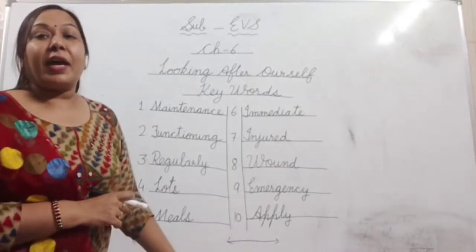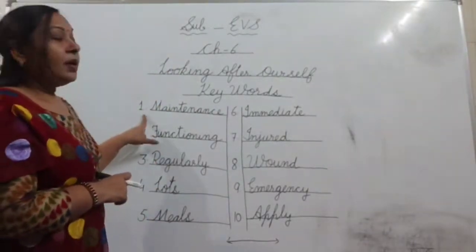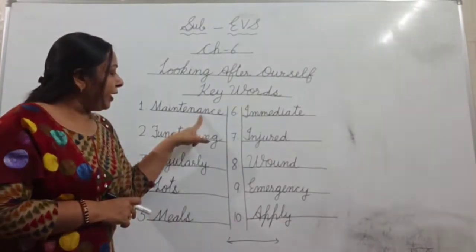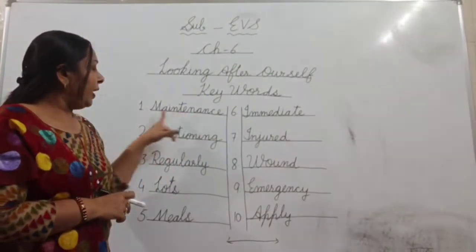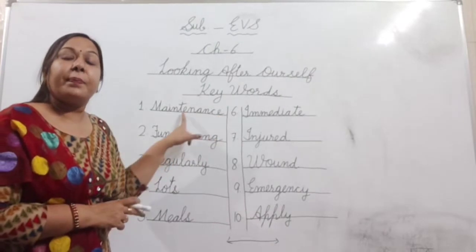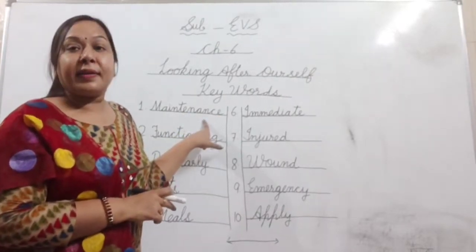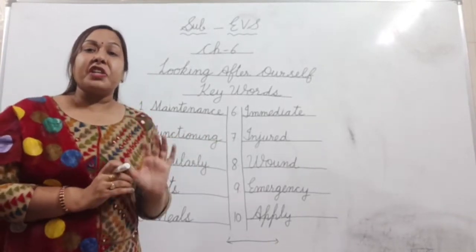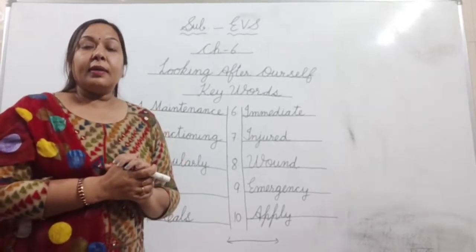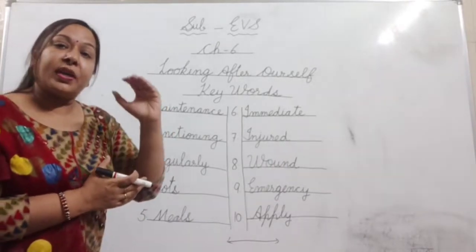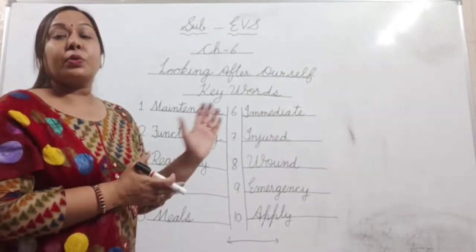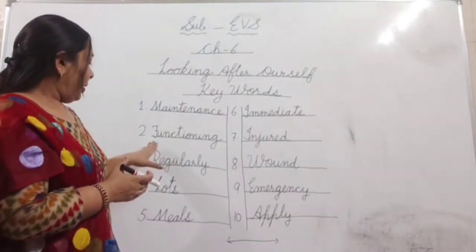Everyone look at the word very carefully. First word is m-a-i-n-t-e-n-a-n-c-e — maintenance. The word is maintenance. Maintenance means preservation — a process to keep something safe. Maintenance kya hota hai? Kisi cheez ko rakhne ka dhang, rakh rakhaab. So preservation bhi bol dete hain — a process to keep something safe means rakh rakhaab.